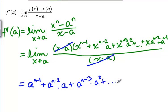plus A times A to the N minus 2, plus A to the N minus 1, replacing all the X's with A's. But notice something now.